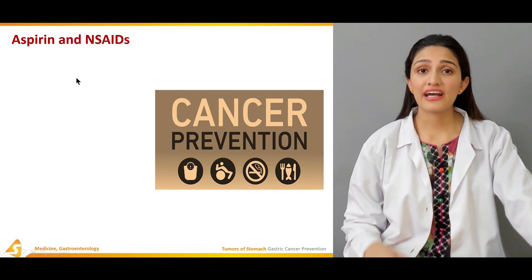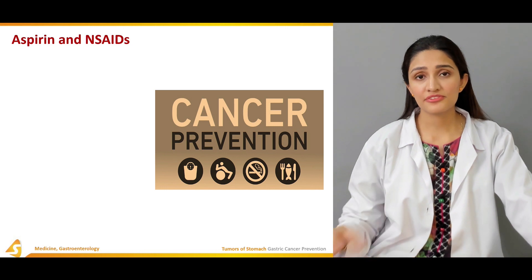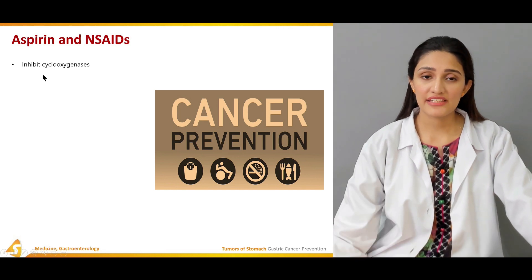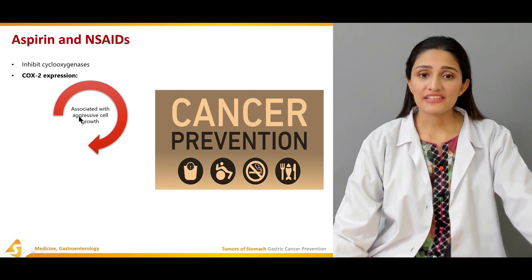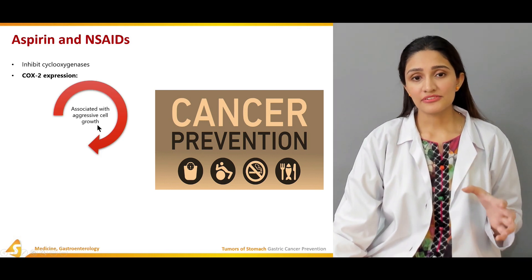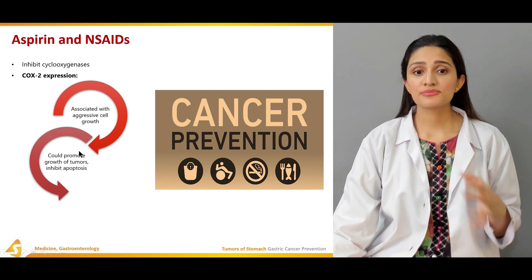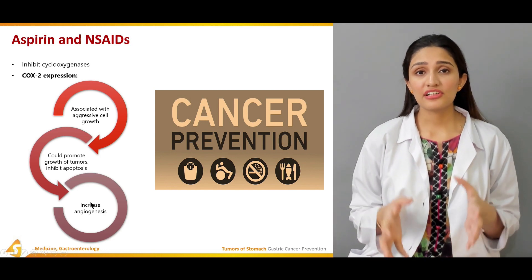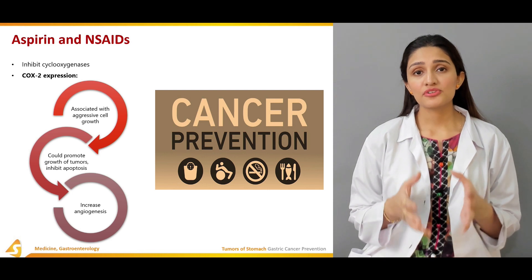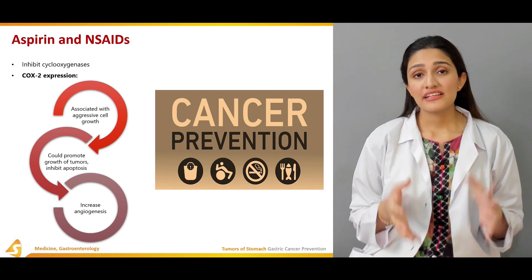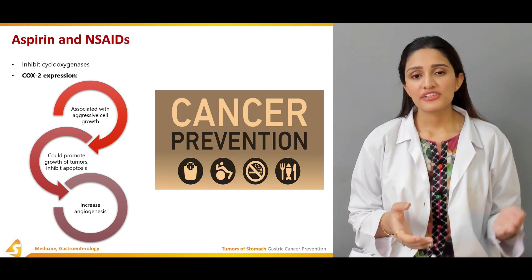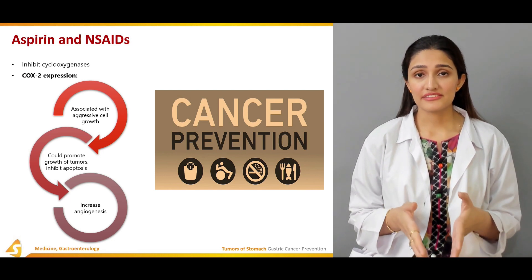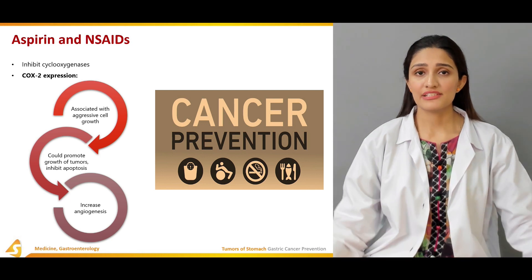Aspirin and NSAIDs have a protective role against cancer development. They inhibit cyclooxygenase and COX-2 expression — COX-2 is associated with aggressive cell growth, tumor promotion, inhibition of apoptosis, and increased angiogenesis. Since aspirin and NSAIDs are inhibitors of COX-2, these factors such as angiogenesis, inhibition of apoptosis, and increased proliferation can all be reduced with aspirin and NSAID intake.